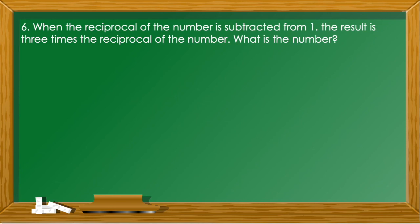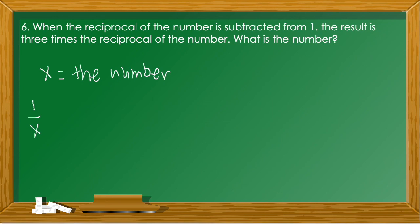Last example, problem number six: When the reciprocal of a number is subtracted from 1, the result is 3 times the reciprocal of the number. What is the number? Let x be the number. Its reciprocal is 1/x. The equation is: 1 − 1/x = 3 × (1/x), which simplifies to 1 − 1/x = 3/x.